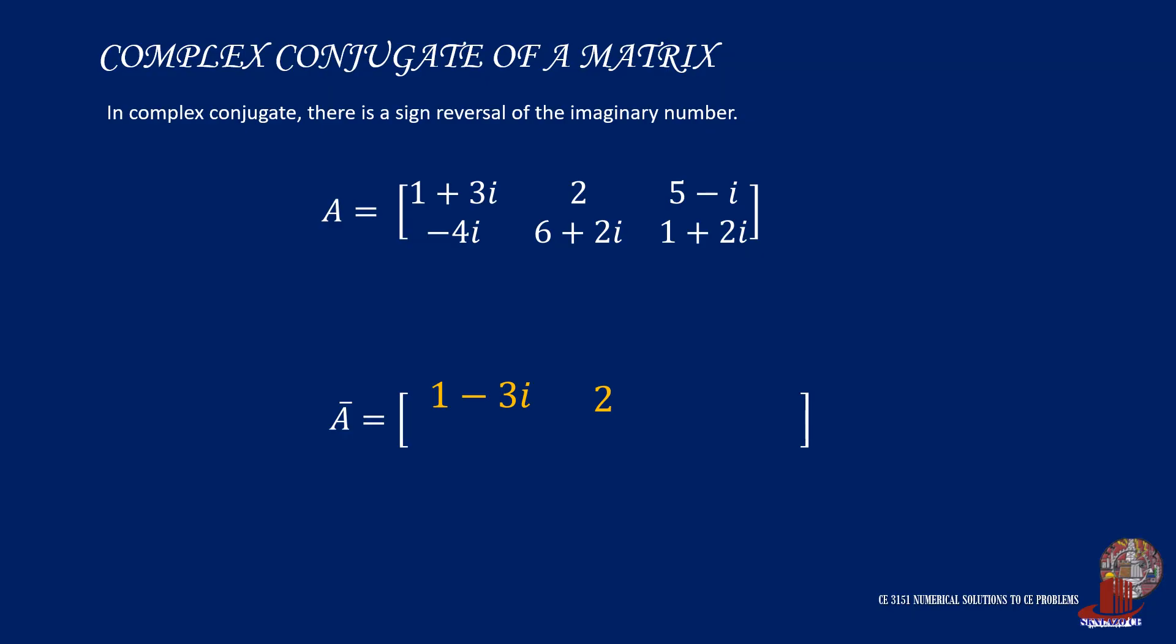For element 2,1 of negative 4i, its complex conjugate is positive 4i. And same is followed for element 2,2, making it 6 minus 2i. And the last element 2,3 resulting to 1 minus 2i.